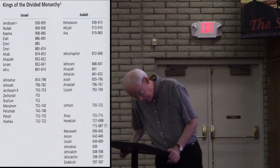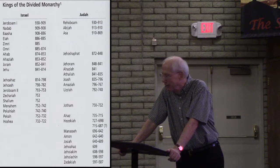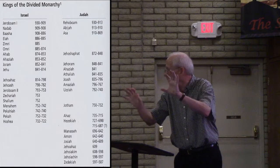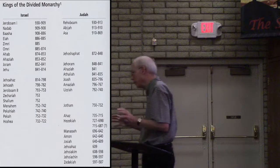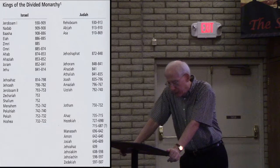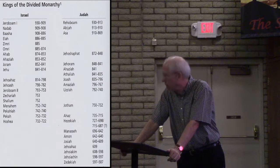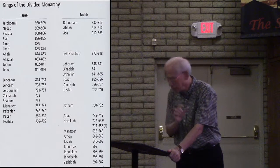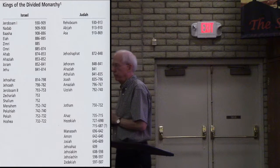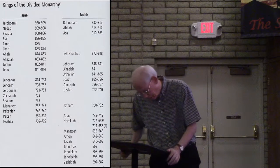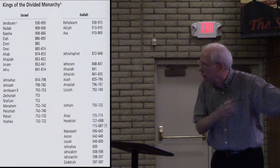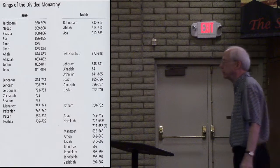Then Jehoash — also called Joash — king of Israel, the son of Jehoahaz, walked in the sins of Jeroboam. But he visited Elisha near the end of Elisha's life, and Elisha predicted that he would be victorious over Syria three times. This is the scene where Elisha has him shoot the arrow out the east window.